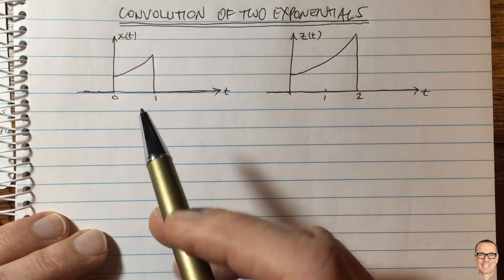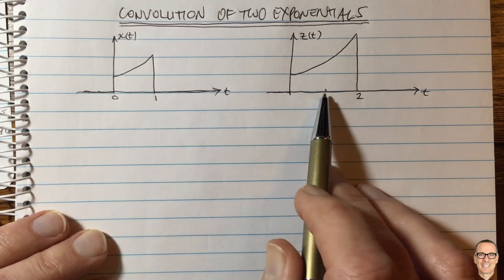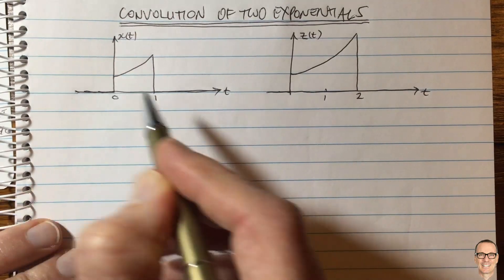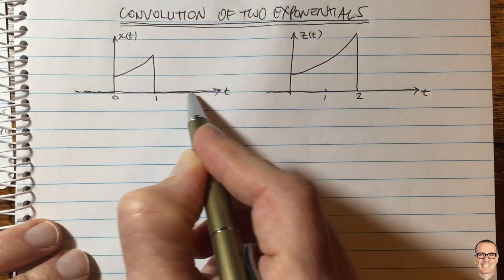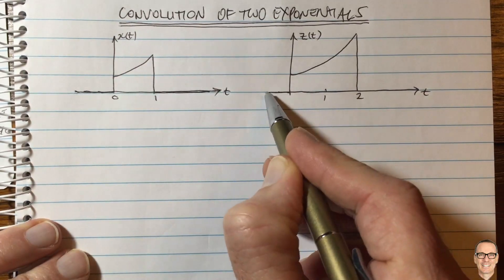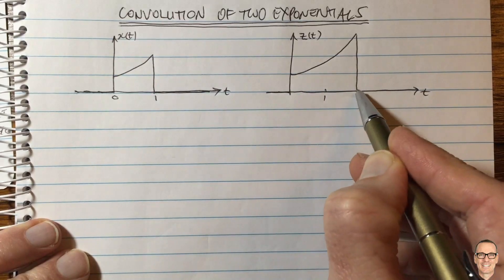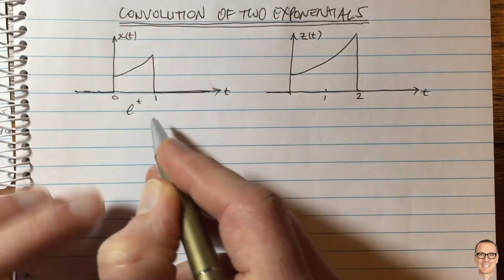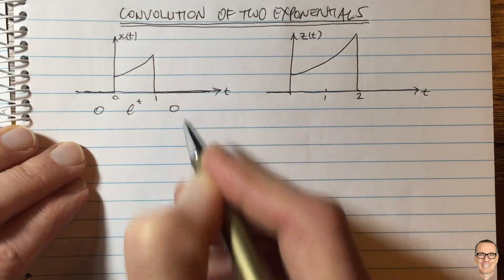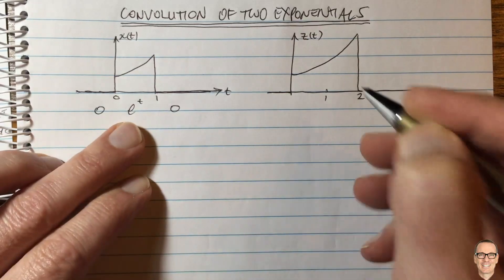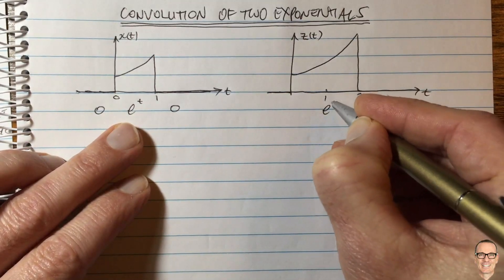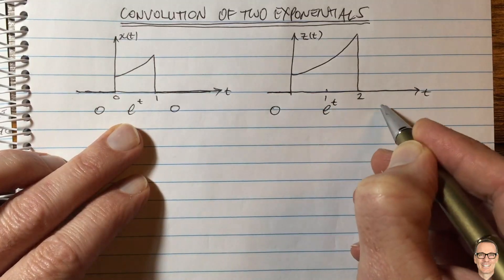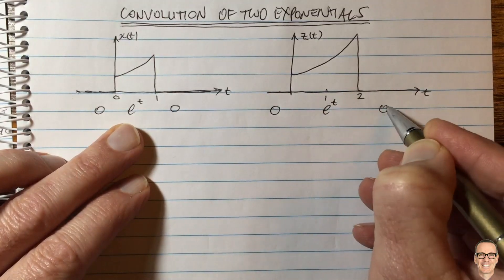Let's look at the convolution of these two exponential functions. There's zero in certain regions and they're exponential in the regions shown. The first function is e to the t in that region, zero outside it. The second function is also e to the t in its region, and zero elsewhere.